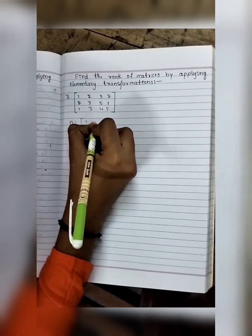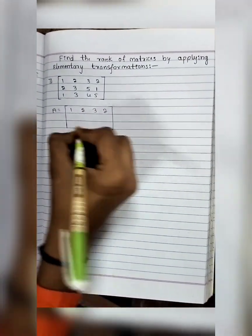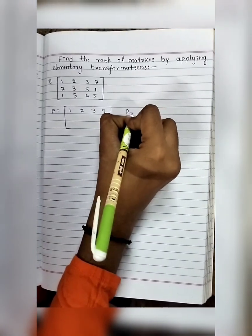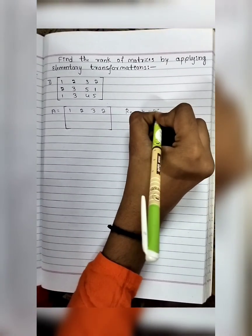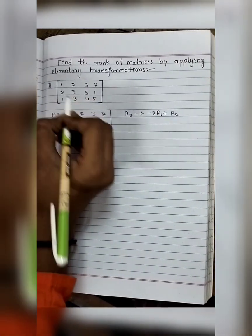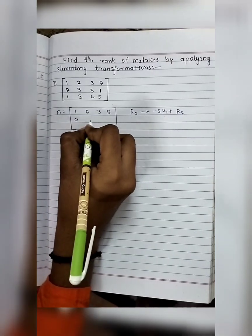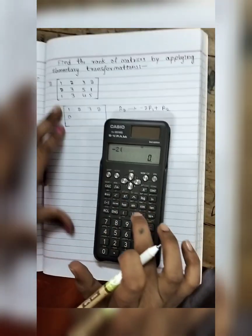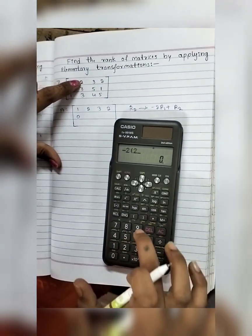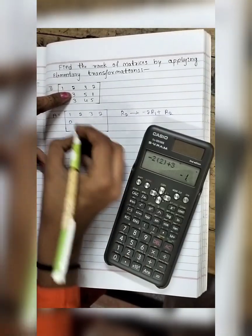First we take R2. R2 minus 2R1 plus R2. Minus 2 into 1 plus 2 gets cancelled, so 0. Next, minus 2R1 is 2 plus R2 is 3 equals minus 1.